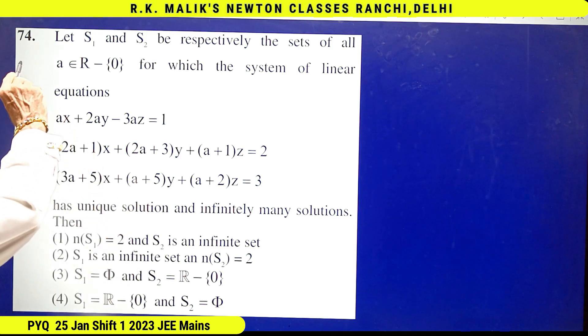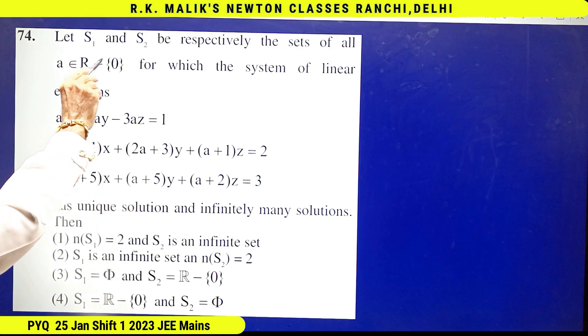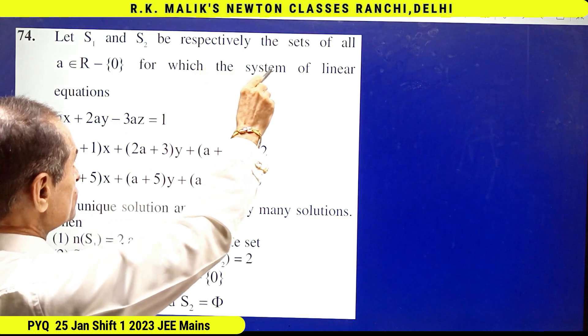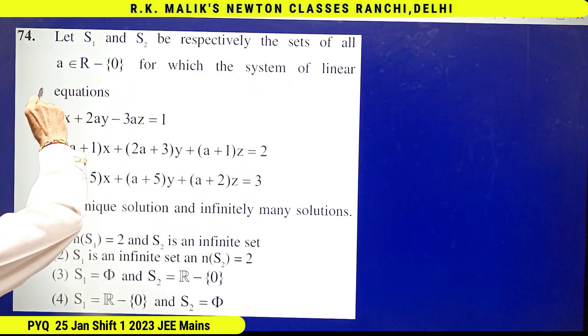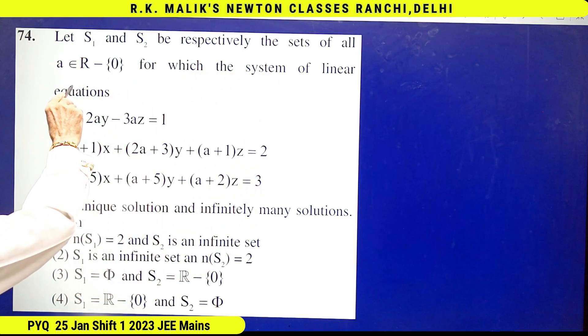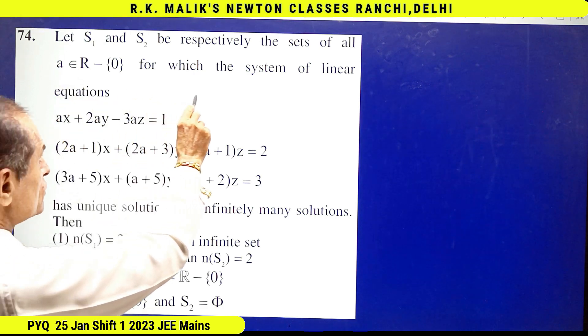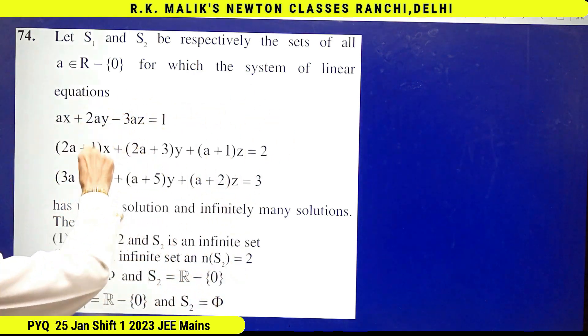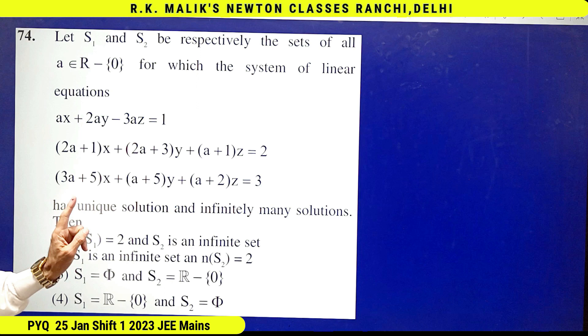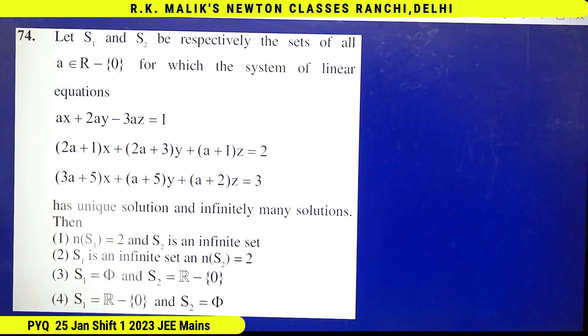In this question, it is given that let S₁ and S₂ be respectively the sets of all values of a belonging to R minus {0} for which the system of linear equations has unique solution and infinitely many solutions. Then you have to find the correct choice.